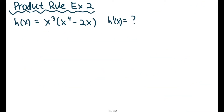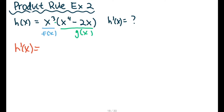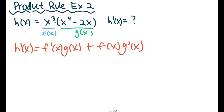So let's try product rule again with our second example. We are given h of x is equal to x cubed times parentheses x to the fourth minus 2x. I always like to identify my functions — x cubed is f of x, and whatever is in the parentheses is my g of x, because the multiplication sign is right here. So again, let's write out our formula: f prime of x times g of x plus f of x times g prime of x. It's always the first derivative and then the function, and then we flip it — the first function and the second derivative.